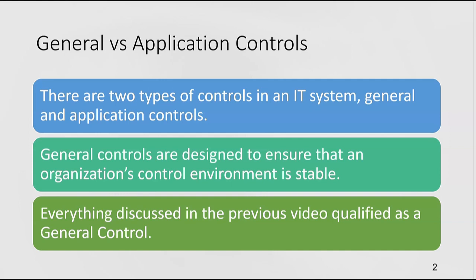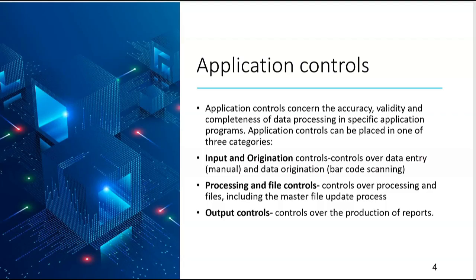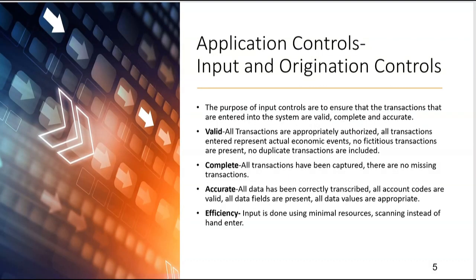In this video we're moving on to application controls. One of the biggest and most important application controls are input controls, because if a company doesn't have control over what's going into their computer system, then nothing that comes out can be trusted. Application controls fall into three categories: input controls, processing and file controls, and output controls. Input implies manual data entry, while origination controls involve automated input such as a barcode scanner.